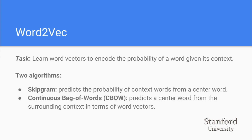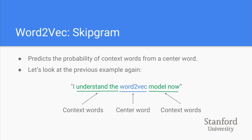We'll cover two algorithms: Skip-gram, which predicts the probability of context words given the center word, and Continuous Bag of Words (CBOW), which predicts the center word from surrounding context. For Skip-gram, given the sentence 'I understand the Word2Vec model now' with center word 'Word2Vec', we generate a one-hot vector with the same dimensions as the vocabulary, with a one at the index of 'Word2Vec' and zero everywhere else.